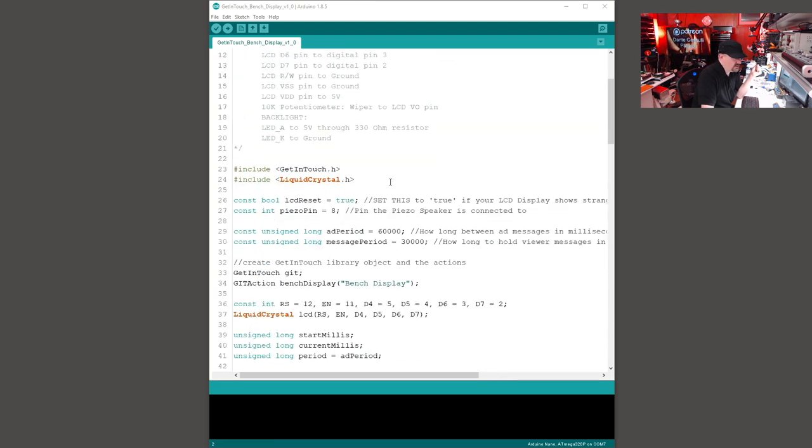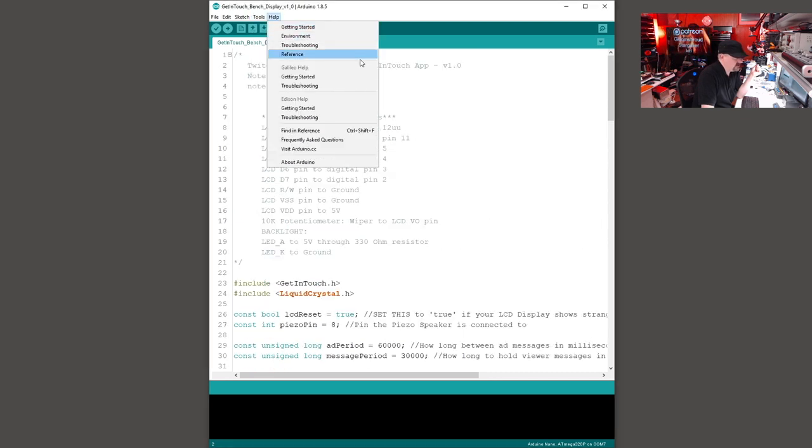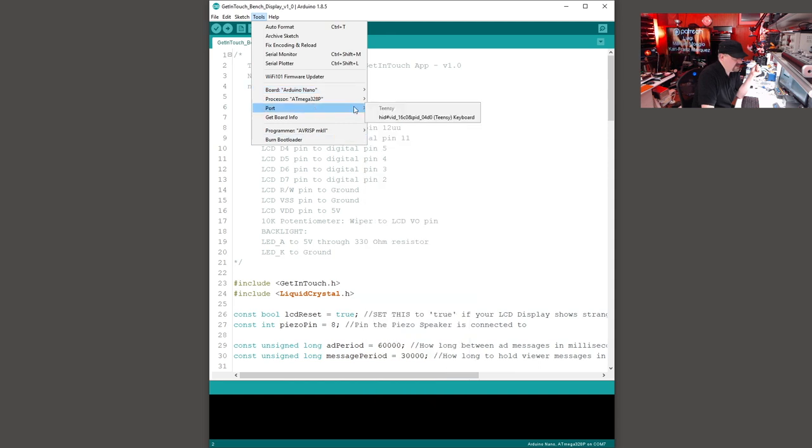So once you've got it all configured, just go to tools, select your board, Arduino Nano, make sure your serial port is correct, and just upload it.